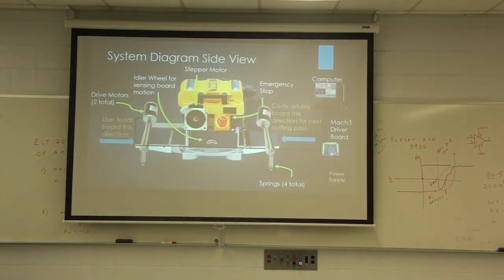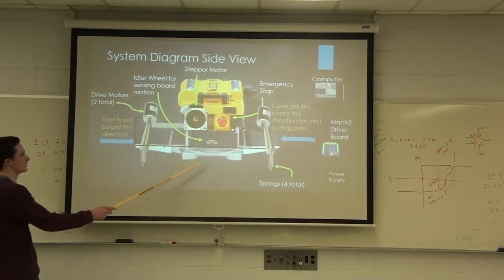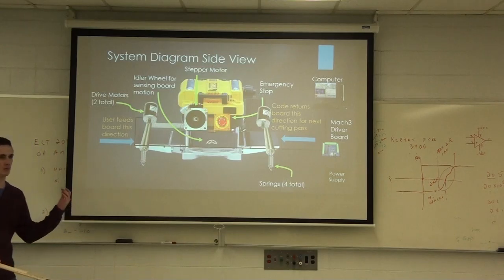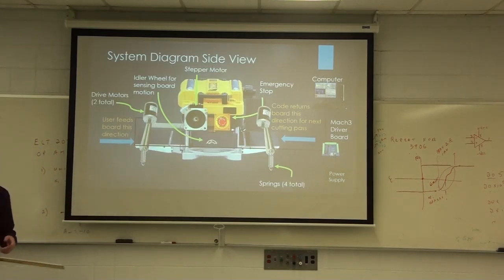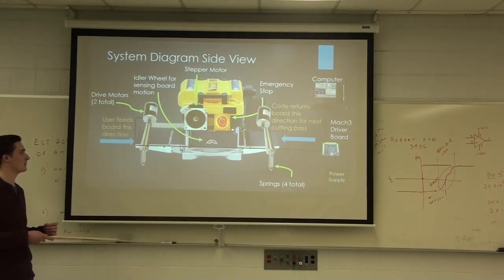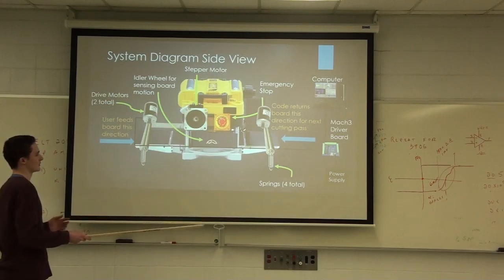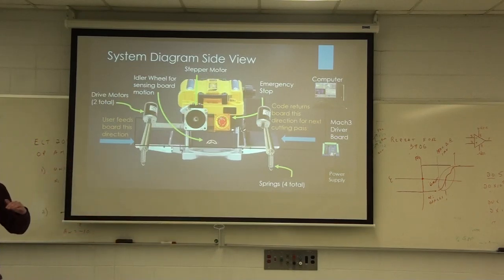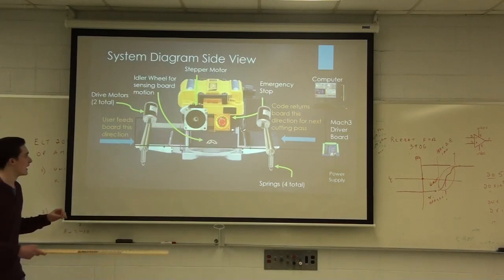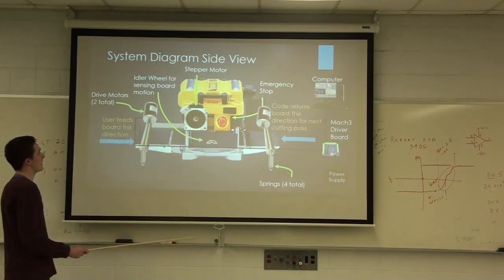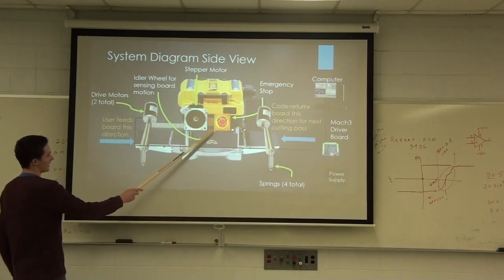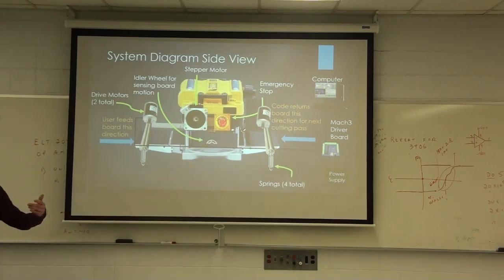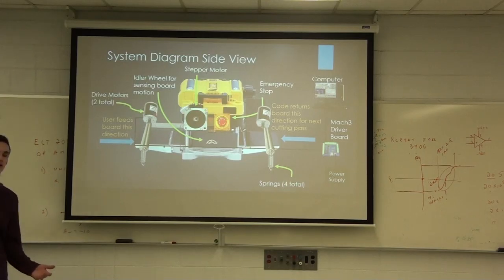A couple other main pieces are we have some external drive rollers to help move the board through the planer. There are some rollers inside the cutting head at the moment, but we wanted to augment that a little more so that when the cutting head is moved up and away from the part, you can still move the board back and forth. So those are shown here and here. And then there is an idler wheel that's opposite the cutting head, and this provides feedback so that we know how fast the board is moving and at what position we are.